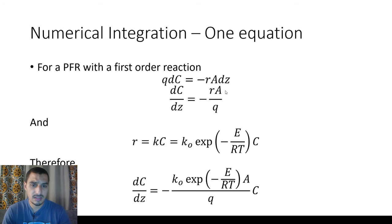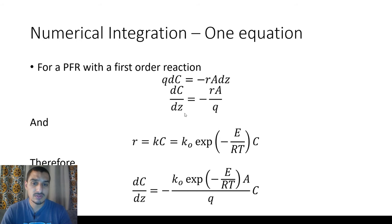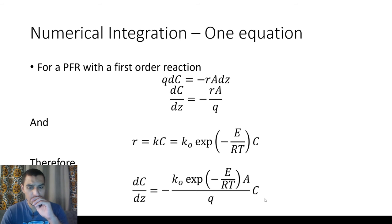Here A is the cross-sectional area of the tube or reactor, Q is the flow rate, R is the rate of reaction, C is the concentration, and z is the length. Assuming a first-order reaction, the kinetics are R = K·C, where K takes the Arrhenius form: K = K₀ · exp(-E/RT). Plugging this in gives you the full equation for the concentration profile along the reactor.